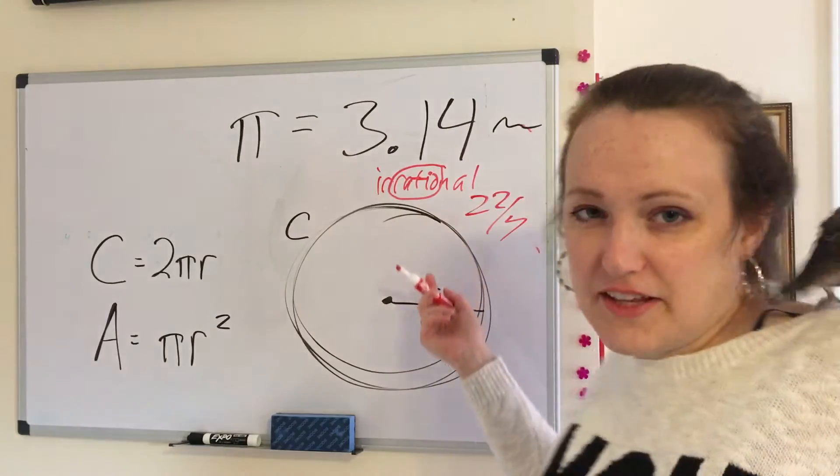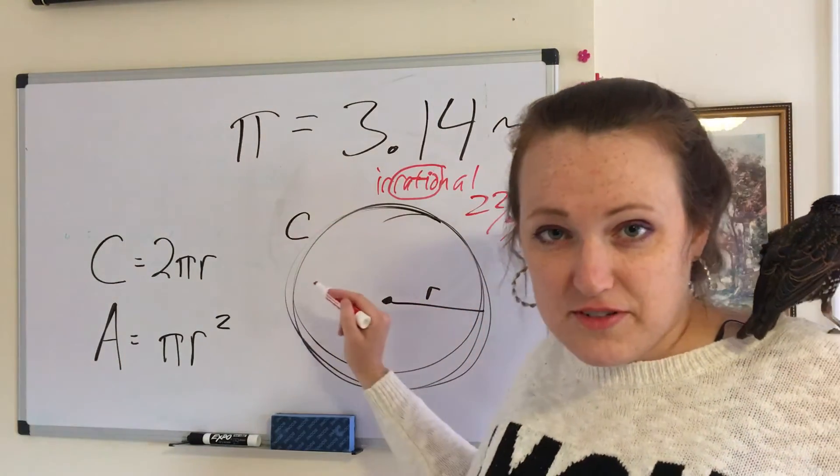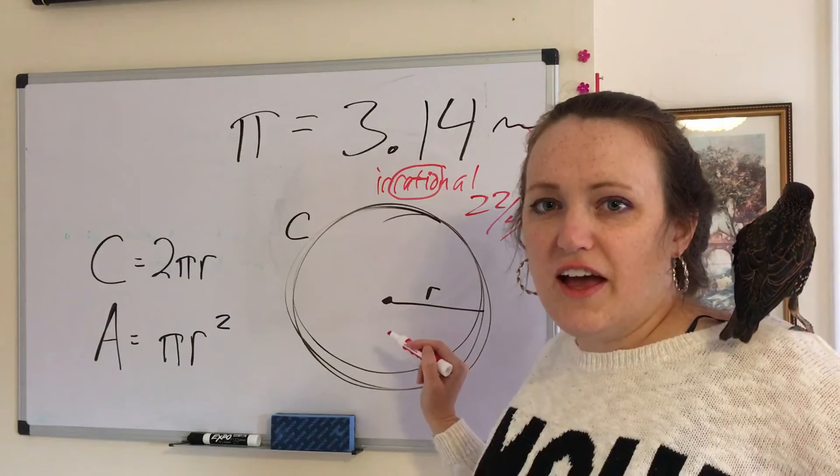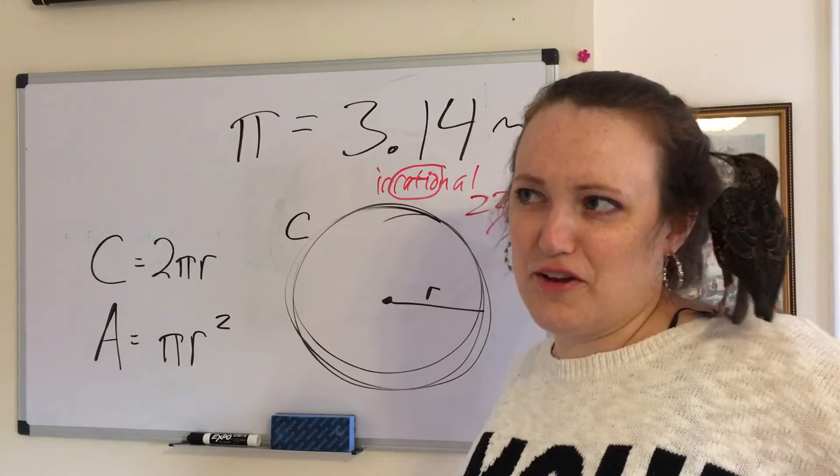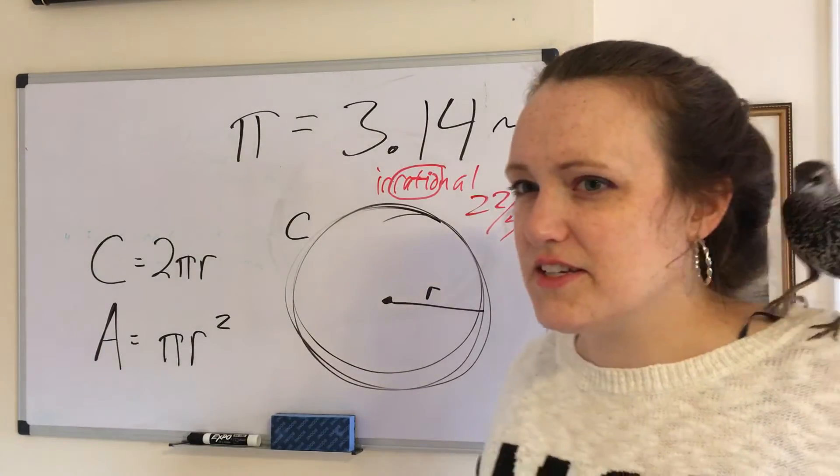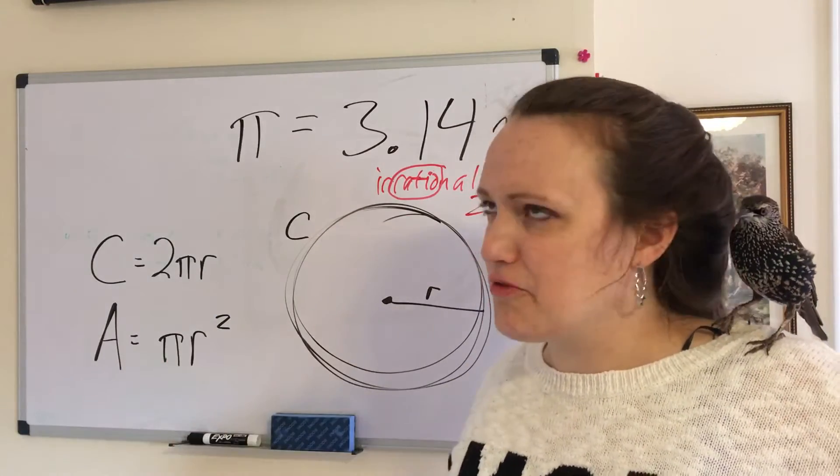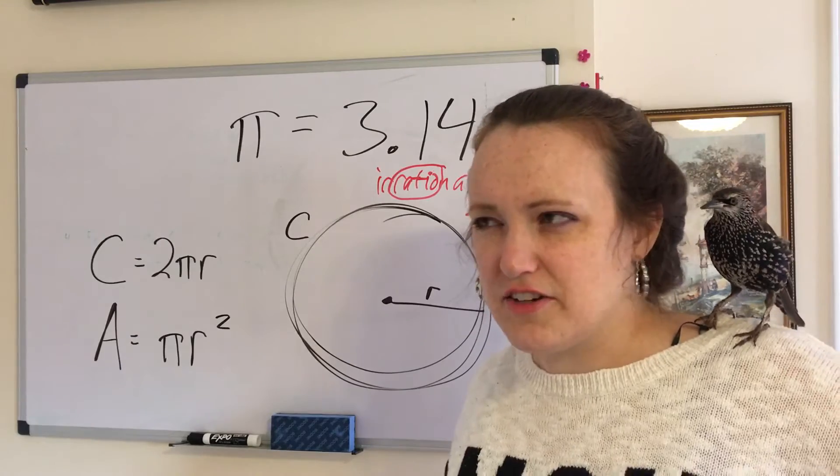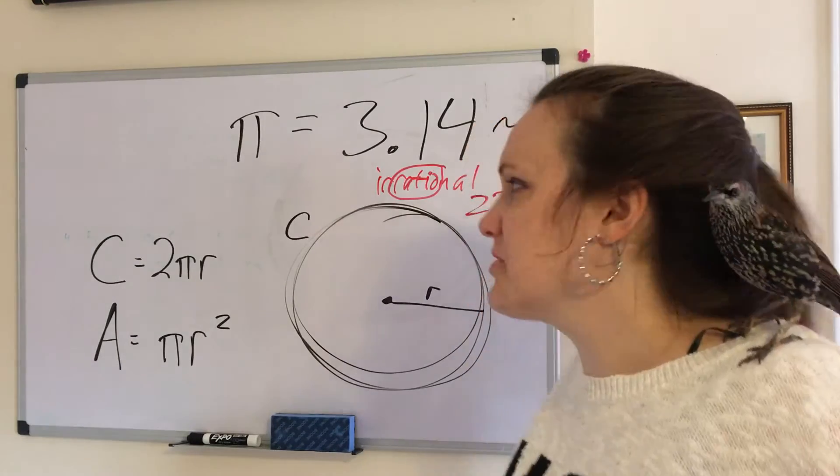So 3.14, how did they get that number? They looked at the circumference of every circle and the radius of each respective circle and they did some division, and they figured out whenever you divide the circumference by the radius it's 2 Pi and whenever you divide the area by radius squared it's Pi. A lot of different civilizations figured it out at different times. They all kind of came up with the same similar number.